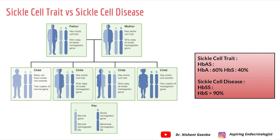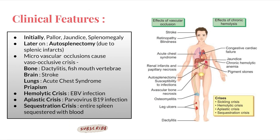There are two important terms: sickle cell trait, where only one gene is affected, and sickle cell disease, where both genes are affected. Looking at the pedigree chart — if both father and mother have sickle cell trait, 25% of children will be normal, 50% will have sickle cell trait, and 25% will have the disease. In sickle cell trait, there is about 60% normal hemoglobin and 40% HbS; in sickle cell disease, more than 90% is HbS.